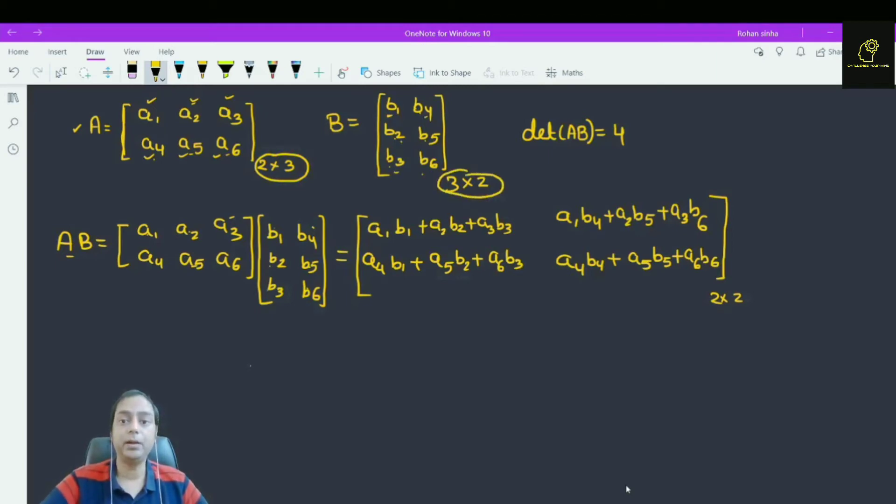What is given? It is given that determinant of AB is equal to 4. Now, what is the AB matrix?